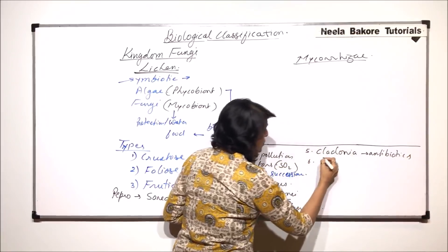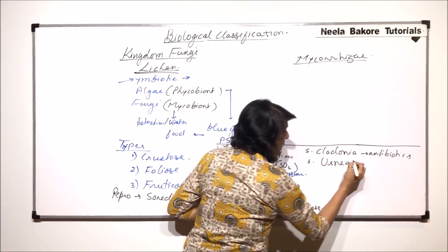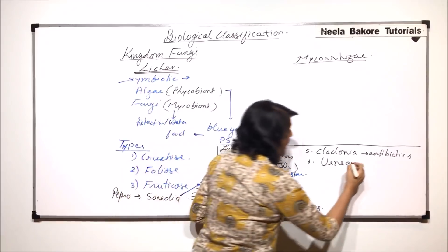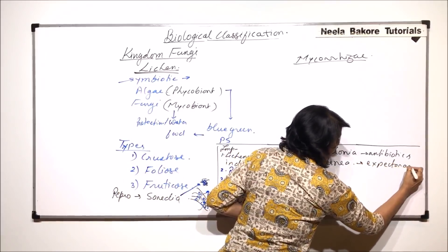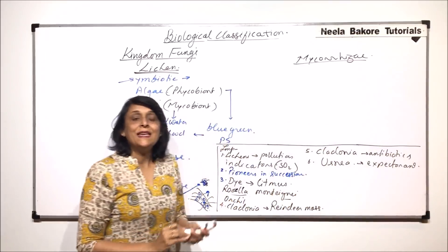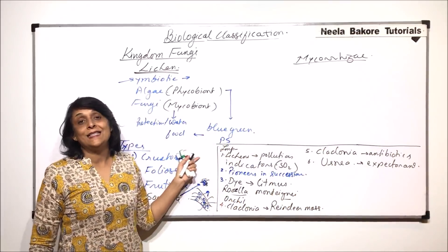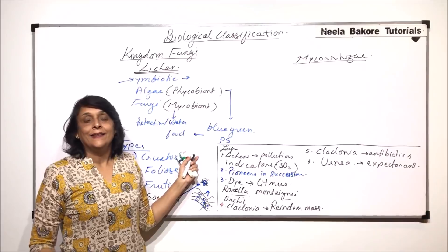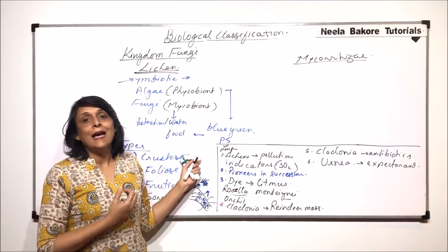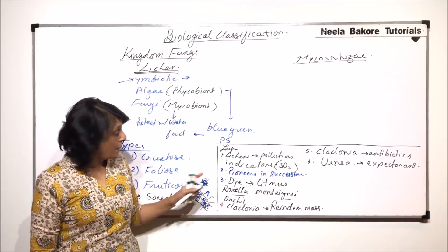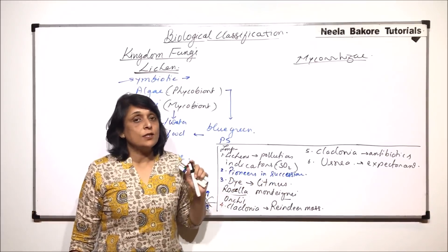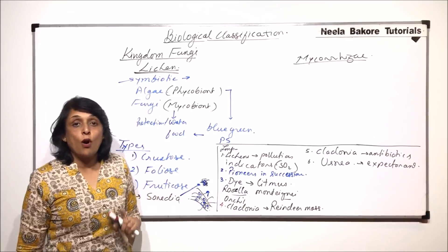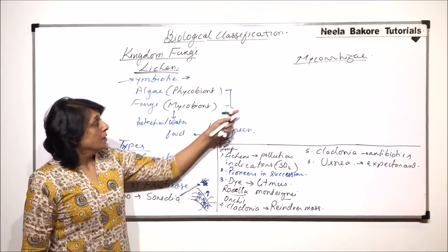There is one more called Usnea, which is also a lichen and is used as an expectorant. So there are many uses of these lichens, and they also help us understand how this symbiotic association works. Plus, very important pioneers in succession, especially when it has to start on land.